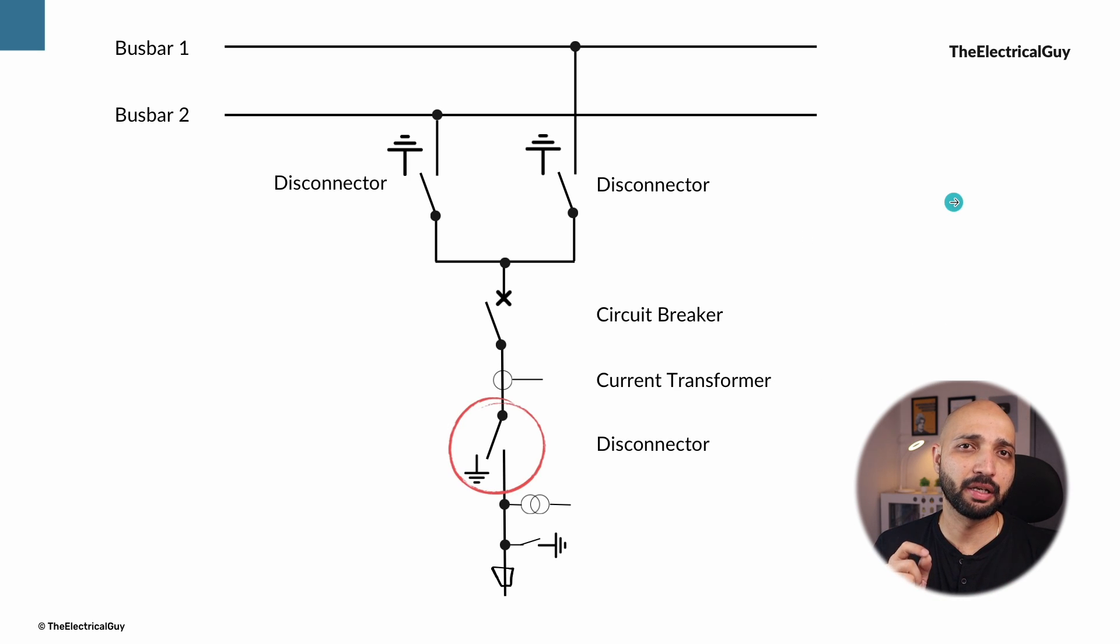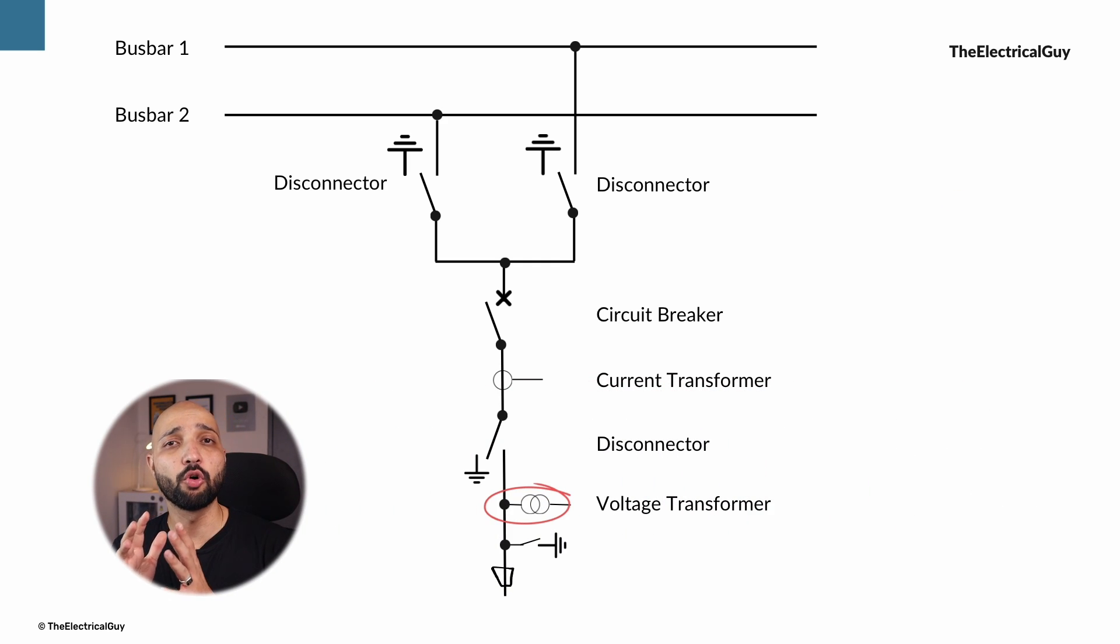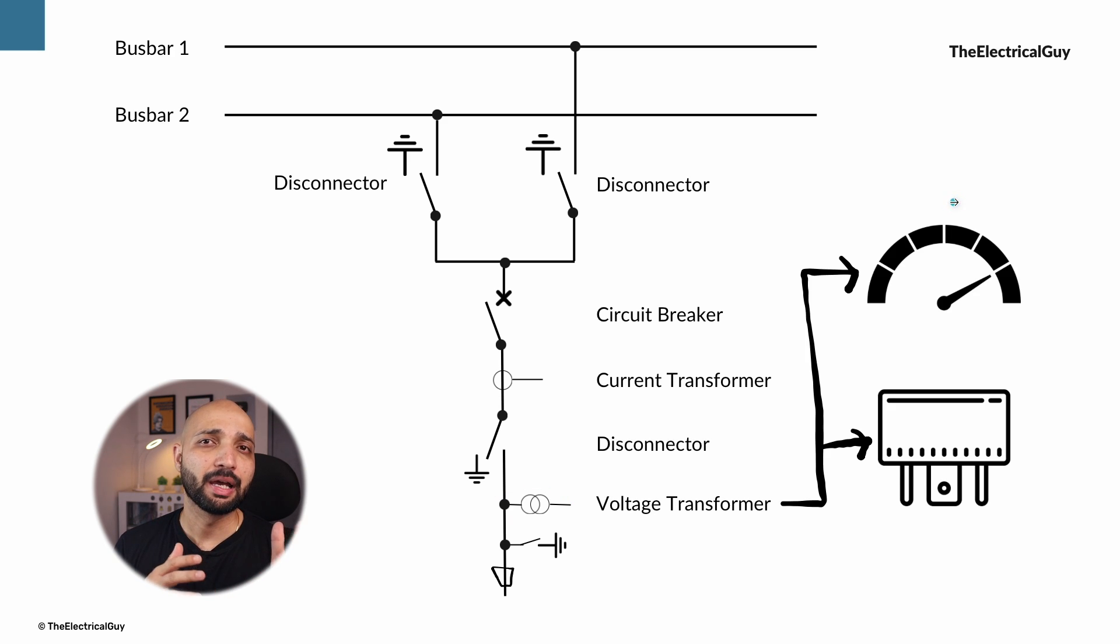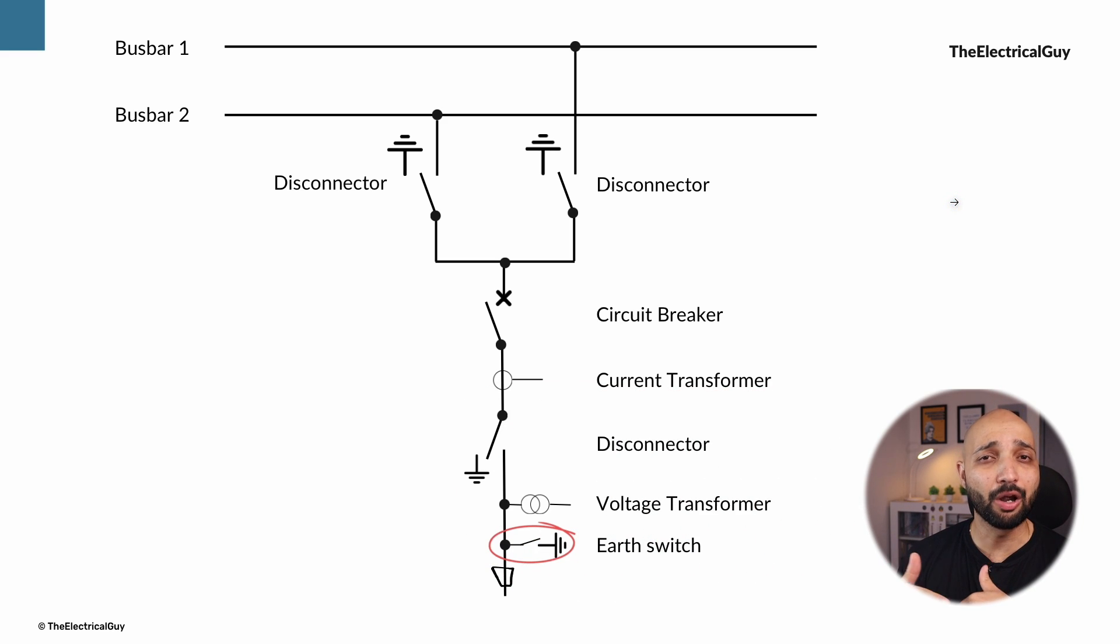Again we have a disconnector here with earth switch. After the disconnector we have a voltage transformer. Voltage transformer is used to measure the voltage in the system and also to monitor the voltage levels. Just like current transformer, voltage transformer also has two types of cores. Input of one is given to meters and another is given to relay. And then there is an earth switch provided which helps to ground any trapped charges. And then at the bottom we have arrangement for cable termination from where the cables will carry the supply maybe to a transformer.